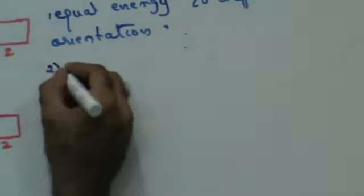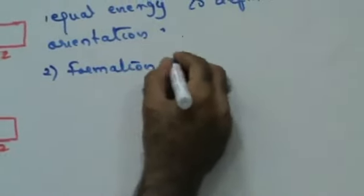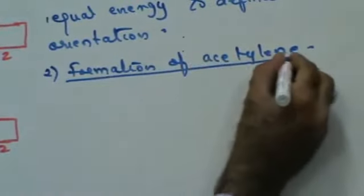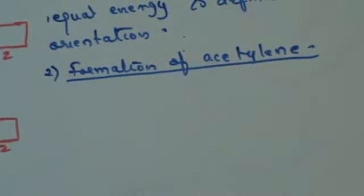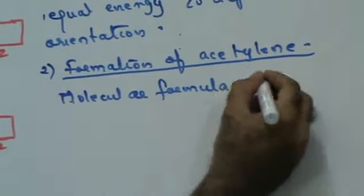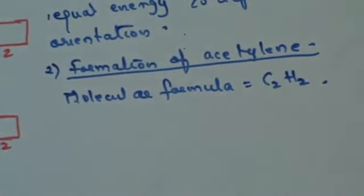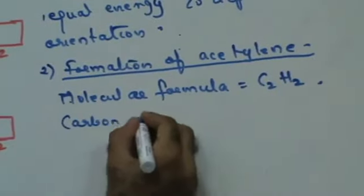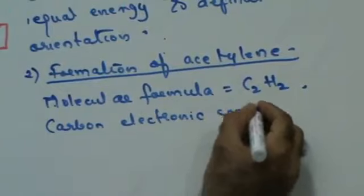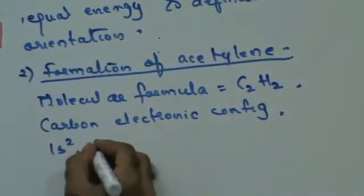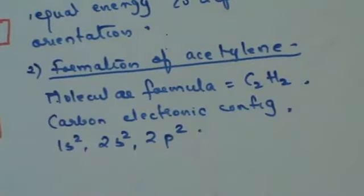Let's try to understand this with an example. Let's see the formation of acetylene. The molecular formula of acetylene is C2H2. The electronic configuration of carbon: we have already done this multiple number of times. It is going to be 1s2, 2s2, 2p2.